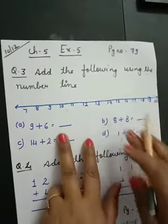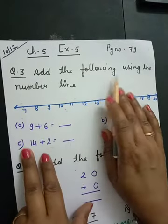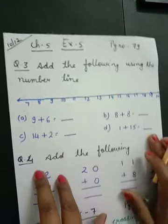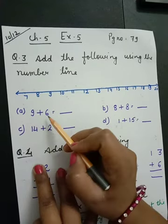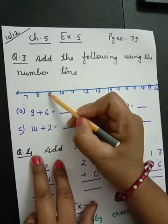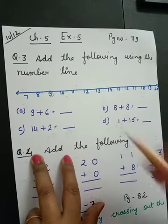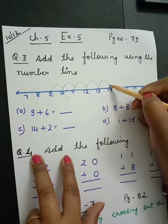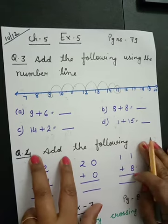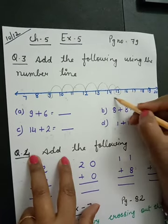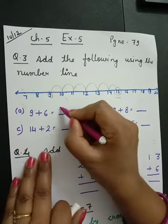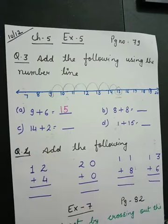Now question number 3. Look here. Add the following using the number line. You have to add and use the number line. 9 plus 6: start at 9, how many steps do we go ahead? 6 steps. 1, 2, 3, 4, 5, 6. So what answer you have got? 15. Write the 15. Got it all of you?